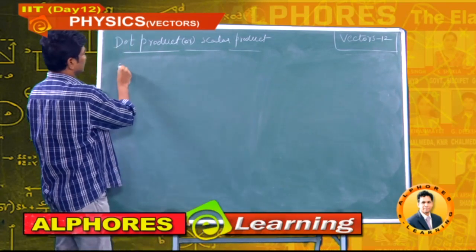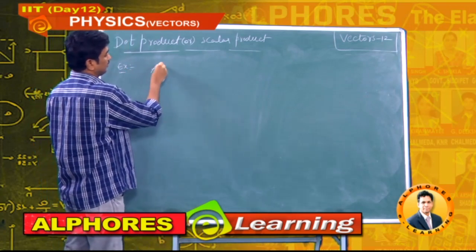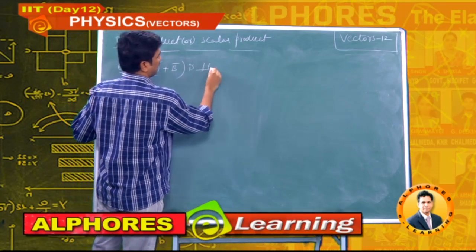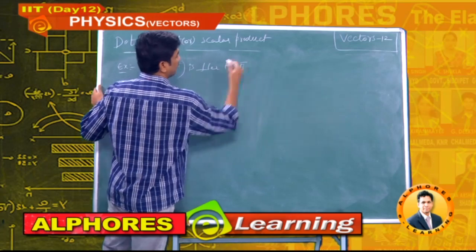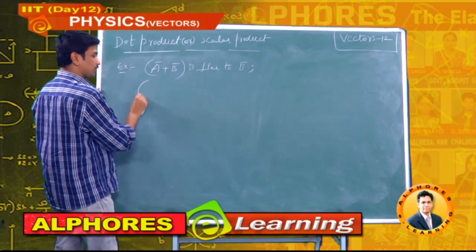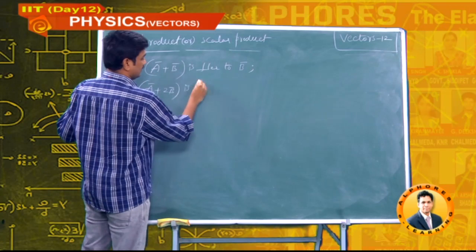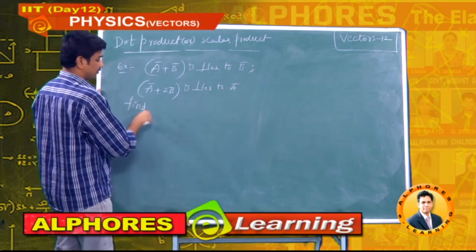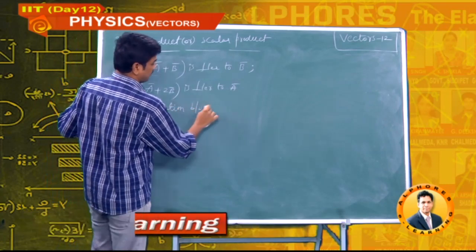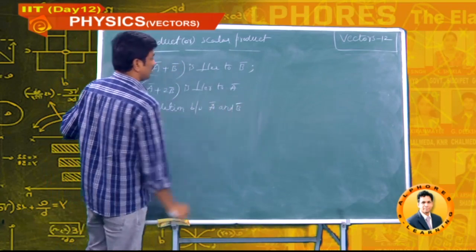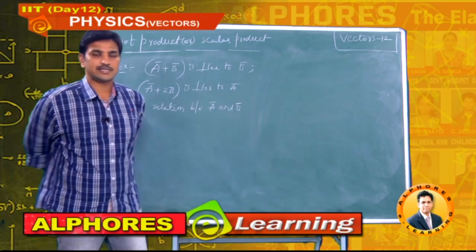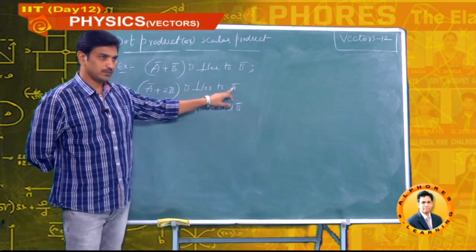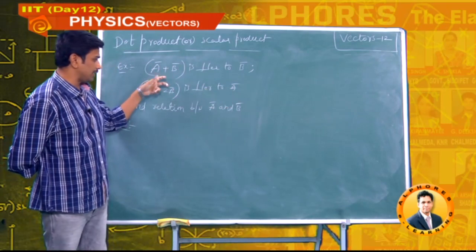One more example: ā + b̄ is perpendicular to b̄, and ā + 2b̄ is perpendicular to ā. Using these two conditions, we should calculate the relation between ā and b̄.